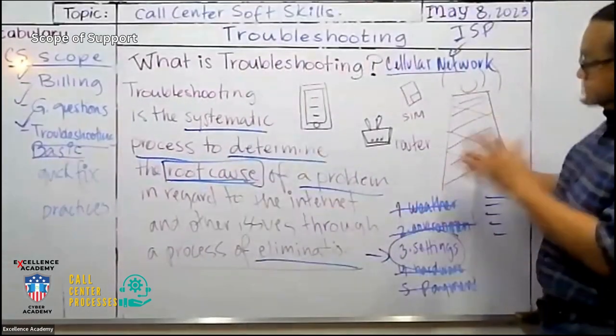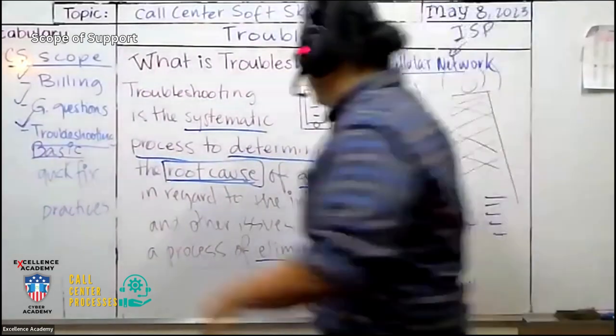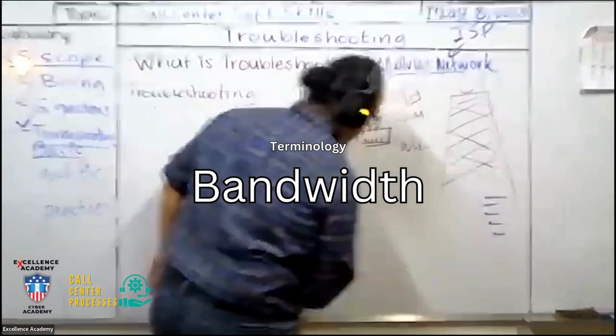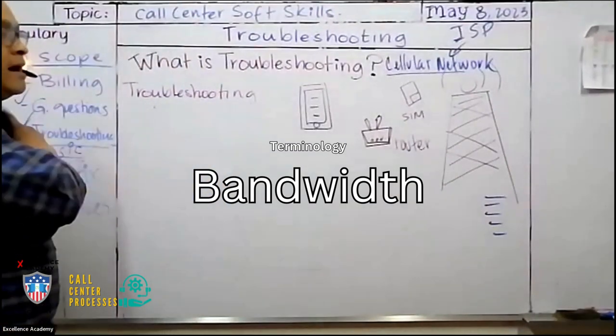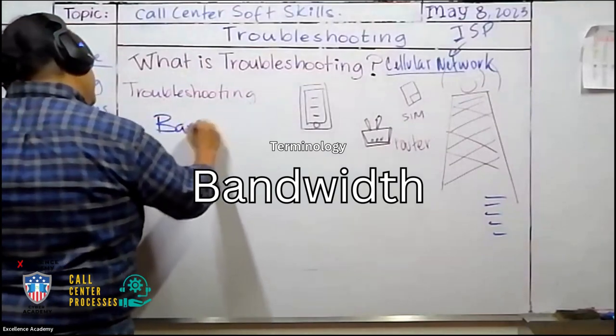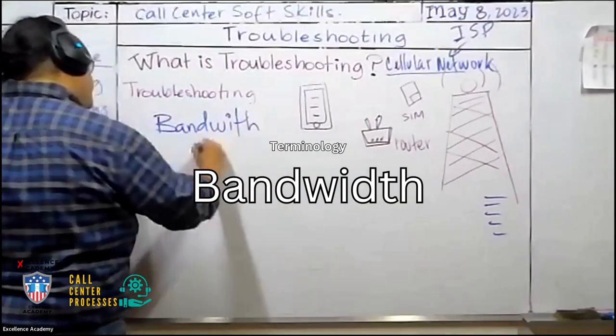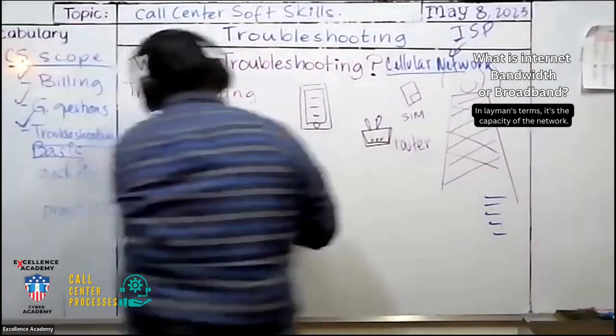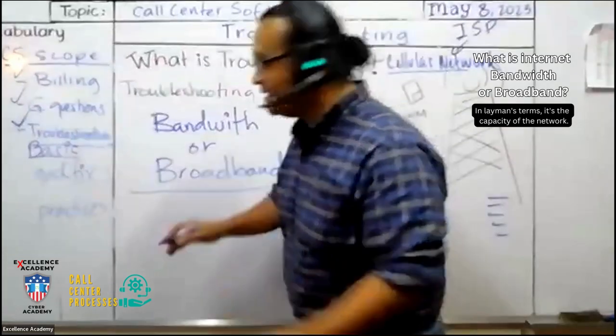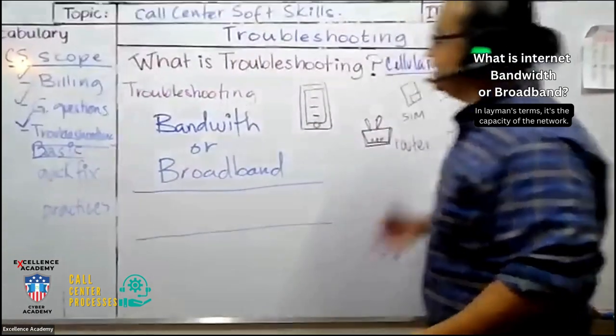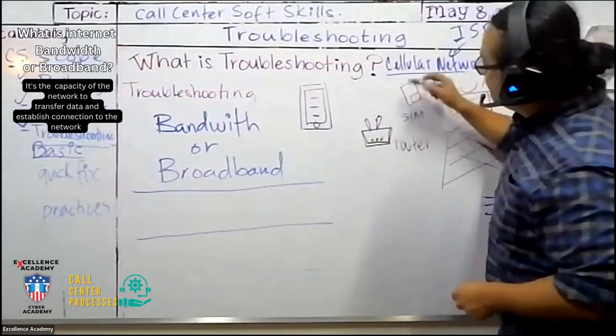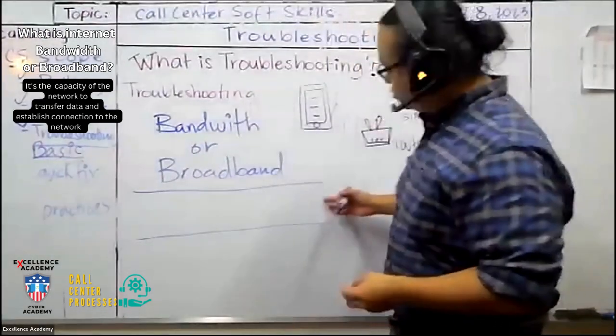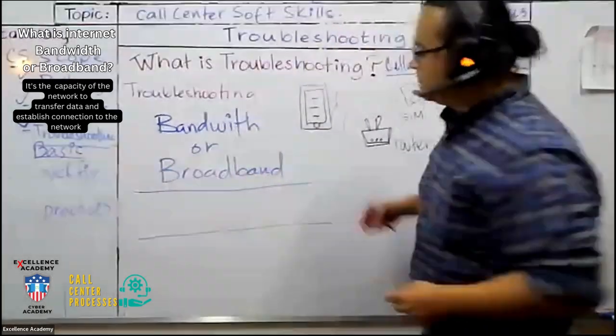So that's basically what we're going to learn. And we're going to talk about some very cool vocabulary and terminology that we're going to learn in this class. We're going to talk about bandwidth. This is a very important term for tonight. Bandwidth or broadband. What is bandwidth or broadband? It's what we call the capacity of the network. It's the capacity of the network to transmit data between the SIM cards, the towers, and the routers. It's that capacity that the network has to transfer data and establish communication.